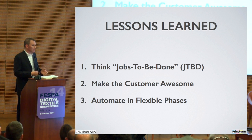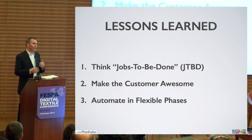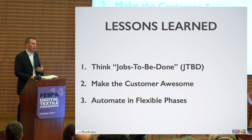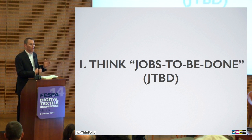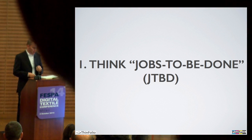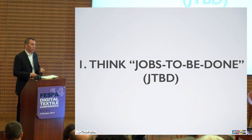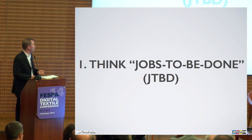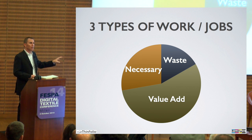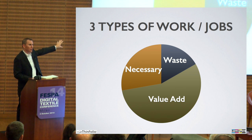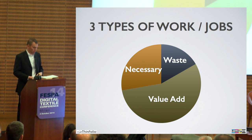I'll wrap up with some lessons learned — so many hard lessons that it was very challenging to distill to just three. The first one is: think in terms of what jobs need to be done. What job does my customer do, and what job do we do? We need to know ourselves and our process and make sure customers are going to be successful. From lean manufacturing there are three types of work: work that adds value, work that's necessary but doesn't add value, and waste. We're trying to move from a pie chart of mostly waste to one where we're adding tremendous value.